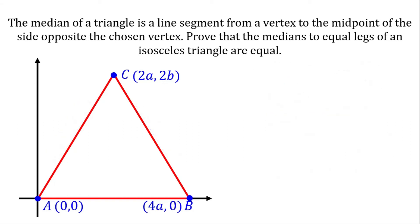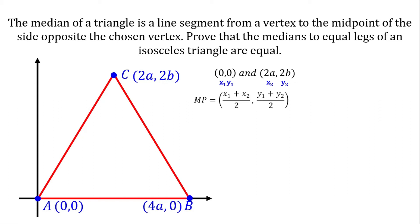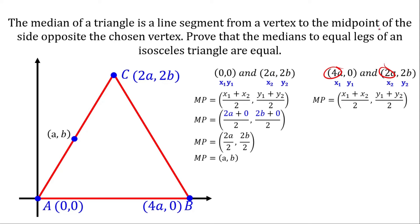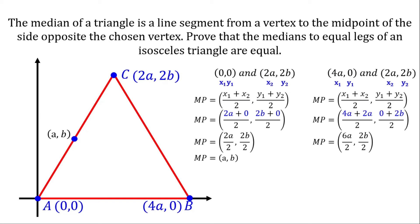Now let's prove that the medians to the equal legs of an isosceles triangle are equal. These are the equal legs. We find the midpoint of one leg and connect it to the opposite vertex, then find the midpoint of the other leg and connect it to the other vertex. Using the midpoint formula: for the first midpoint, 2A plus 0 over 2 and 2B plus 0 over 2, giving us A,B. For the second midpoint: 4A plus 2A over 2 and 0 plus 2B over 2, giving us 6A over 2 and 2B over 2, which equals 3A,B. Let's name these points D and E.